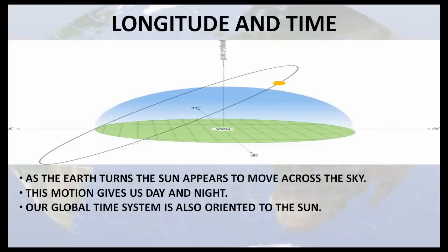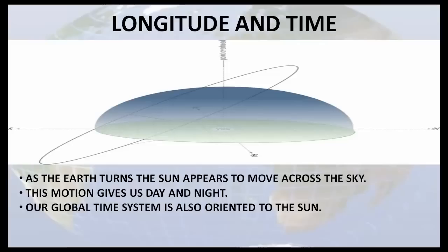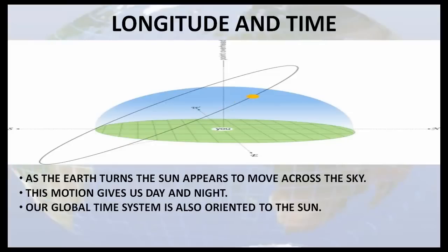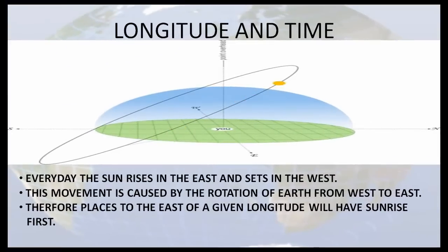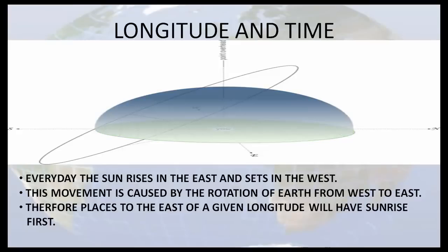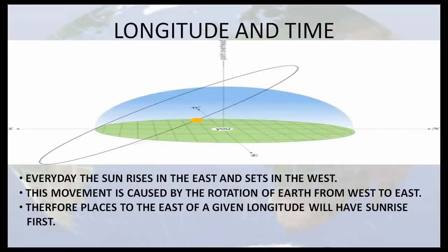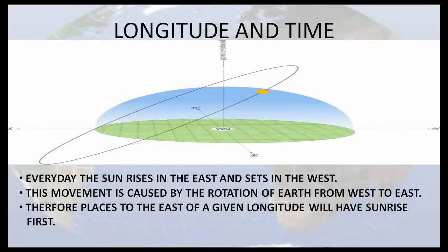As the earth turns, the sun appears to move across the sky. This motion gives us day and night. A global time system is also oriented to the sun. Every day the sun rises in the east and sets in the west. This movement is caused by the rotation of earth from west to east. Therefore, places to the east of a given longitude will have sunrise first.